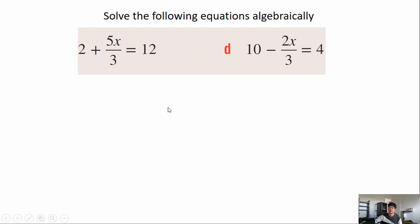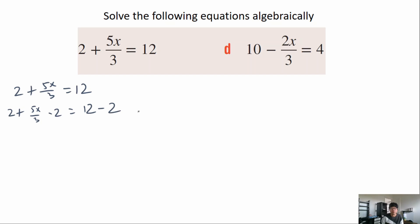Now it's your turn — pause the video and have a go. Welcome back. Question: 2 plus 5x over 3 equals 12. Subtract 2 from both sides giving 5x over 3 equals 10. Multiply both sides by 3 giving 5x equals 30. Divide both sides by 5, giving x equals 6. Give yourself a tick if you got that correct.